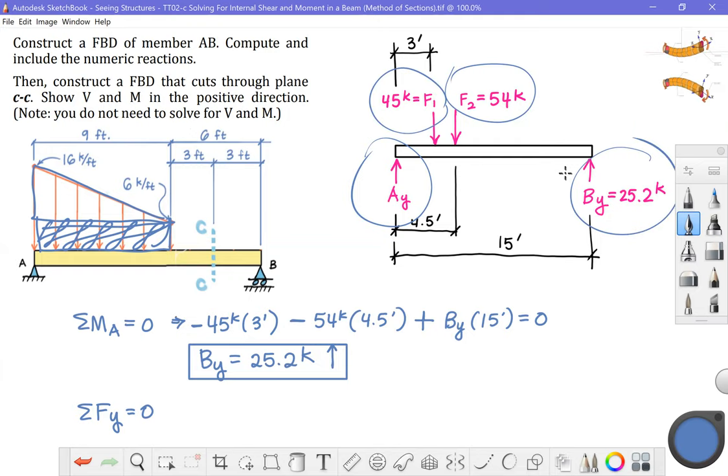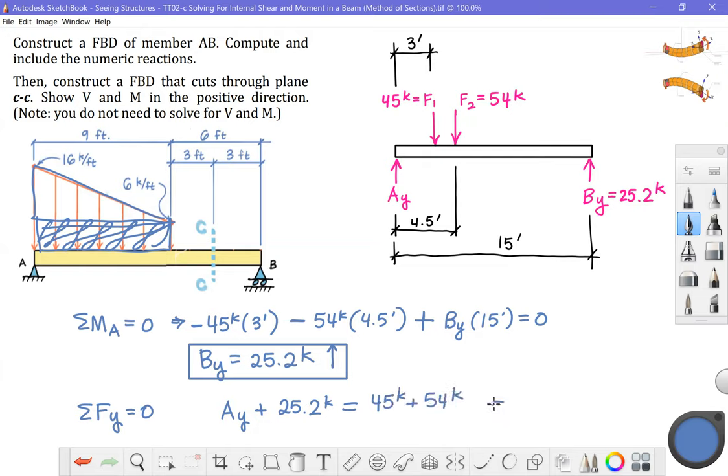Of those four terms, I have two that are pointing up. I have two that are pointing down. So the ones that are pointing up are A sub y plus 25.2 kips. Those have to equal everything pointing down or in the negative direction. 45 kips plus 54 kips. Solve for A sub y. You'll get 73.8 kips for that unknown.